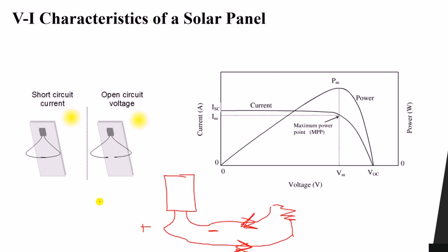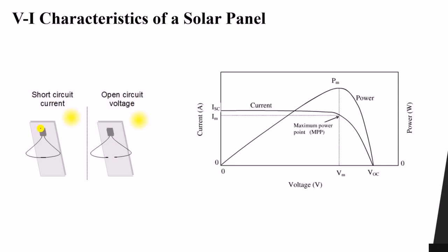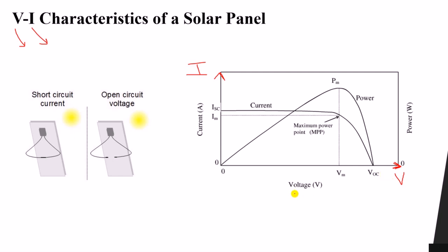This is a junction box which has the two terminals, positive and negative. What we would like to do is find the VI characteristics of a solar panel — VI means voltage-current characteristics. I would like to see how the voltage and current look from the panel. On this figure, the x-axis shows voltage and the y-axis shows current in amperes. The output voltage and output current from the panel are plotted here.